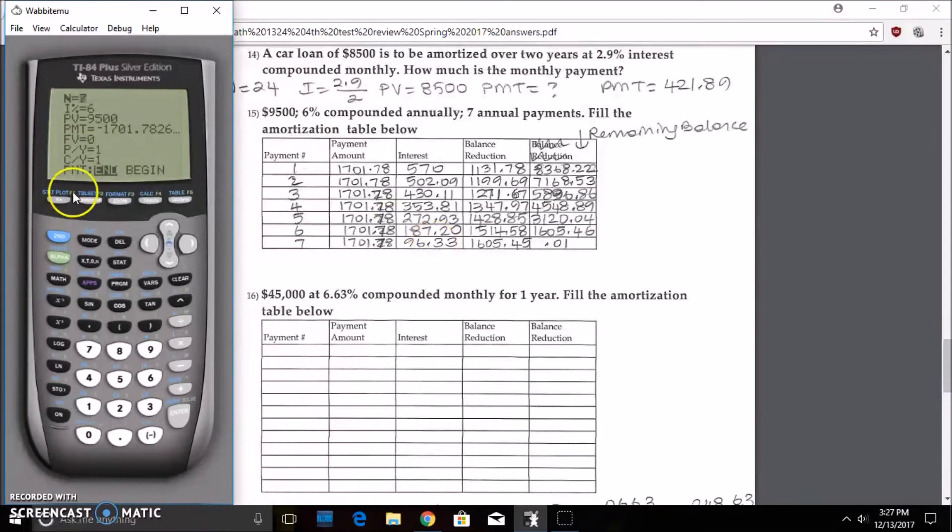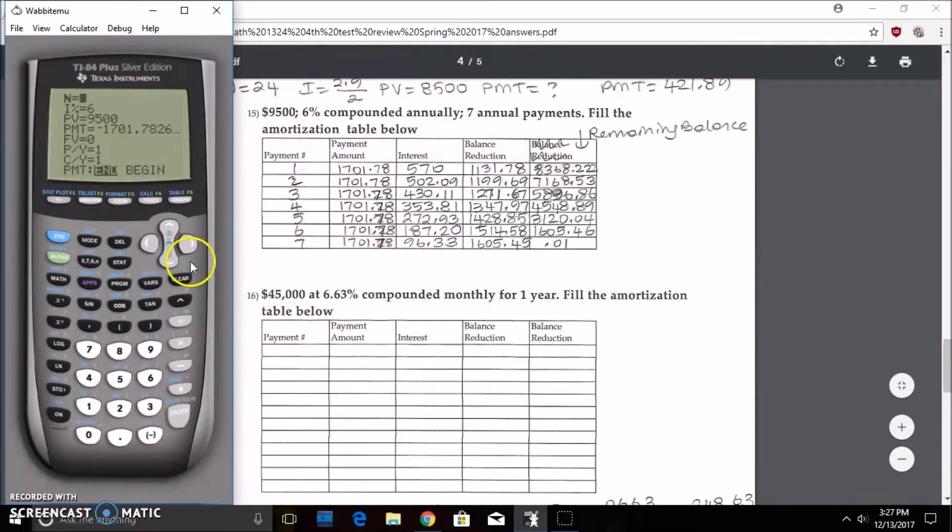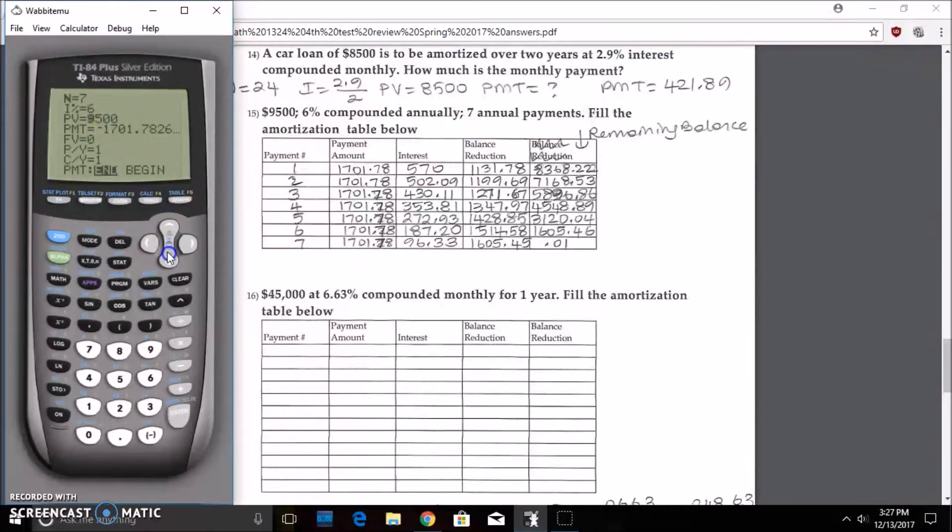So we have the N is 7, right? 6, 9500. And let's just prove this here and just make sure that everything's good. And negative 1701.78.